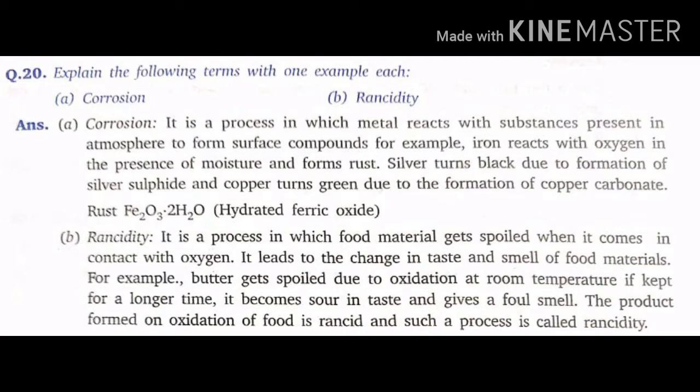Answer A — Corrosion: It is a process in which a metal reacts with substances present in the atmosphere to form surface compounds. For example, iron reacts with oxygen in the presence of moisture to form rust (Fe₂O₃·xH₂O). Silver turns black due to formation of silver sulphide (Ag₂S), and copper turns green due to formation of basic copper carbonate.